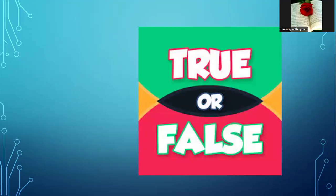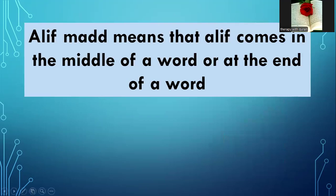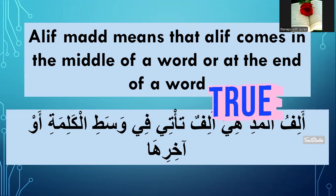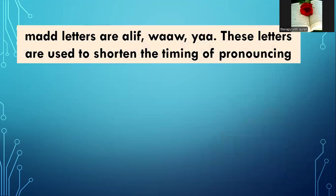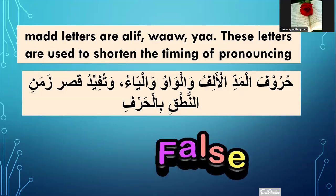Number one — true or false. Alif mad means that alif comes in the middle of a word or at the end of a word. True or false? Yes, it's true. Number two — mad letters are alif, waw, ya. These letters are used to shorten the timing of pronouncing. Shorten? No, that's wrong — false.